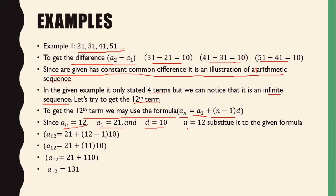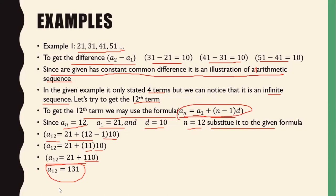So we substitute into the formula: a sub 12 equals 21 plus the quantity of 12 minus 1 times 10. Perform 12 minus 1, which is 11, times 10, which is 110. So the equation becomes a sub 12 equals 21 plus 110. So the 12th term is 131.